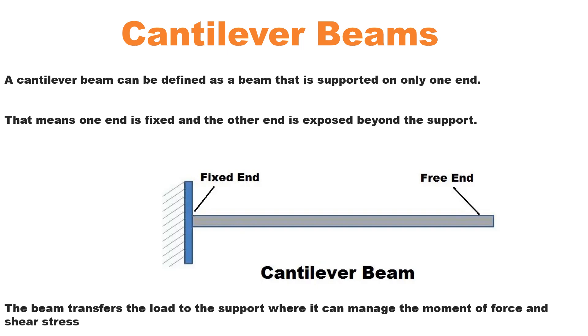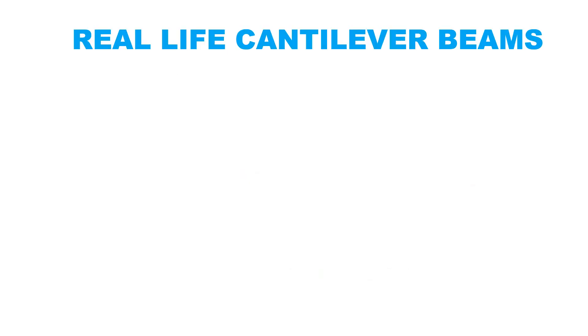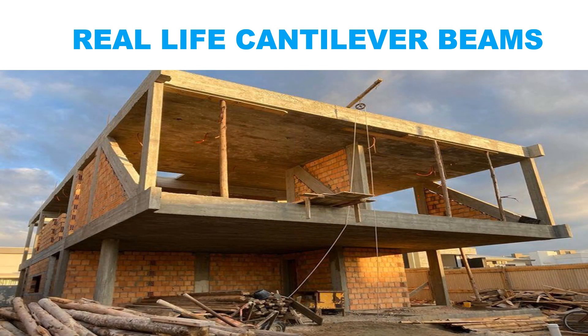Now let's look at how a cantilever beam looks like in real life. Here is our first cantilever beam drawing. This is the beam here — not the column going upward. This end is fixed and this end is exposed, making it a cantilever beam. Whenever you see one end fixed and the other left as a free end, that is a cantilever beam.